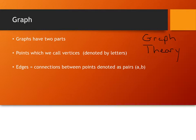In graph theory, when we talk about a graph, we're really talking about an object with two sets. One set is a set of points, or what's called vertices. Now these points, or vertices, are typically denoted by letters or subscripts of letters.